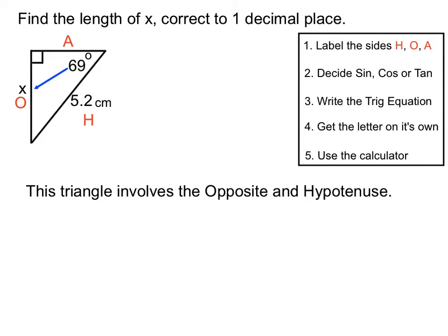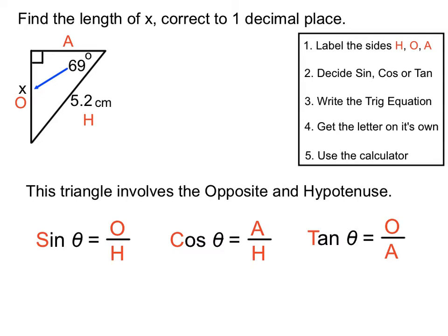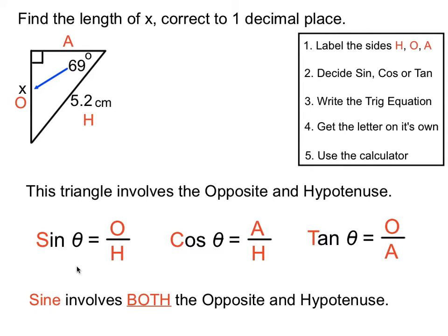Now we're going to decide whether this is a sine, cos or tan question. We have x on the opposite side and 5.2 on the hypotenuse. So this triangle involves the opposite and the hypotenuse, and we'll want a trig ratio that uses both. The sine ratio uses the opposite and hypotenuse, so we'll select that.